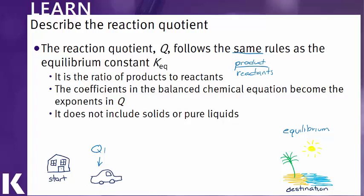But as we start driving, we're getting closer to our destination. Our value of Q, that ratio of products to reactants, is changing. We start to get closer, so we have more products, a little less reactants.